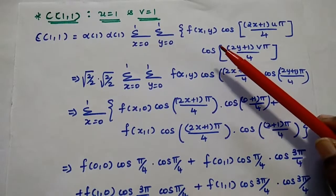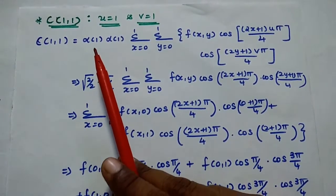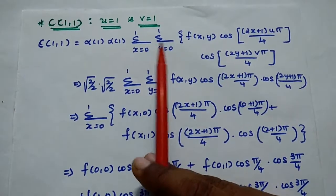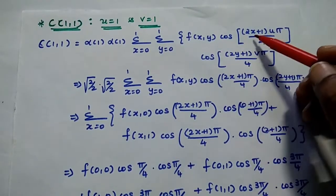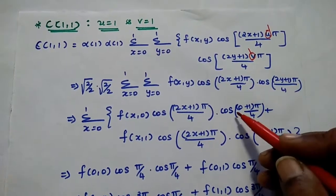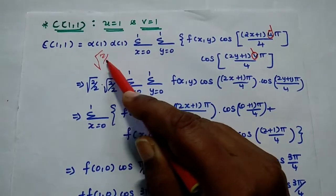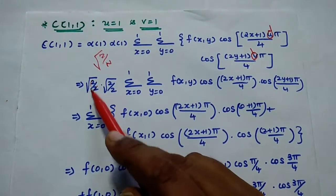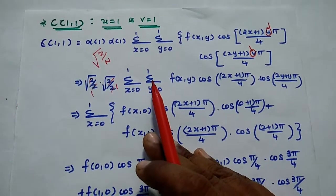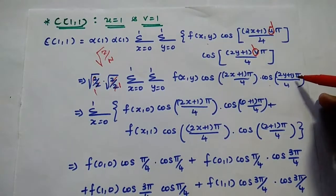The last value is C(1,1), with u=1 and v=1. Substituting: C(1,1) = α(1)·α(1) · Σ(x=0 to 1) Σ(y=0 to 1) f(x,y) · cos[(2x+1)π/4] · cos[(2y+1)π/4]. Since α(1)=√(2/2)=1 for both, we get: Σ(x=0 to 1) Σ(y=0 to 1) f(x,y) · cos[(2x+1)π/4] · cos[(2y+1)π/4].